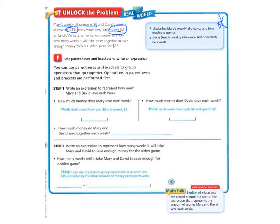First we need to look at how much Mary saves each week. Mary gets $8 and spends $2, so she has $8 at the beginning, and then since she spends $2, that's minus $2. And how much money does David spend each week? Each week David gets $5 and spends $2, so he earns $5 and he spends $2. That's $5 minus $2.